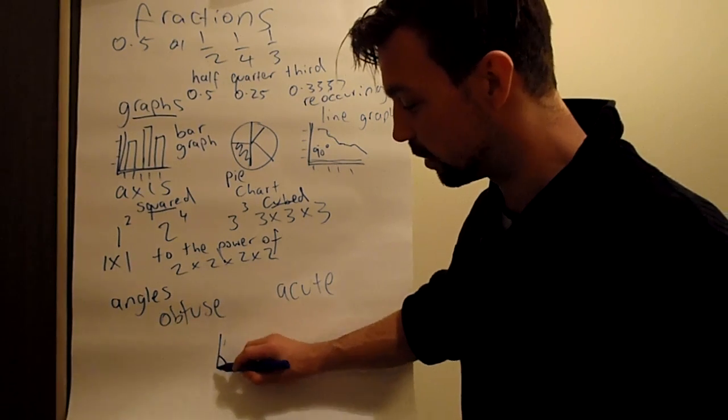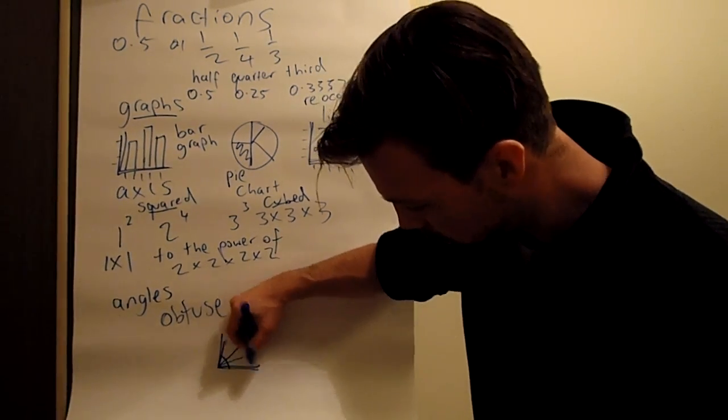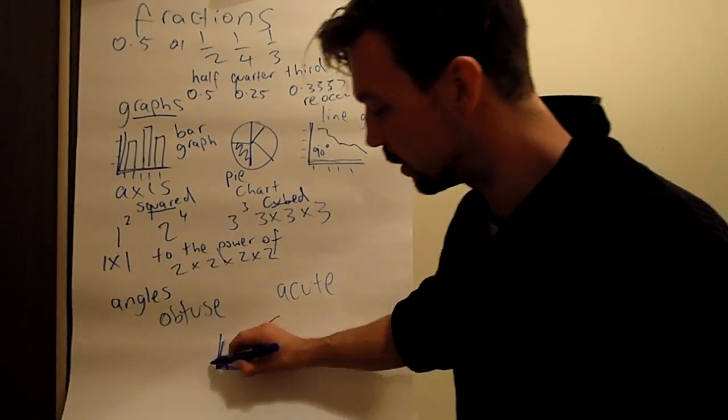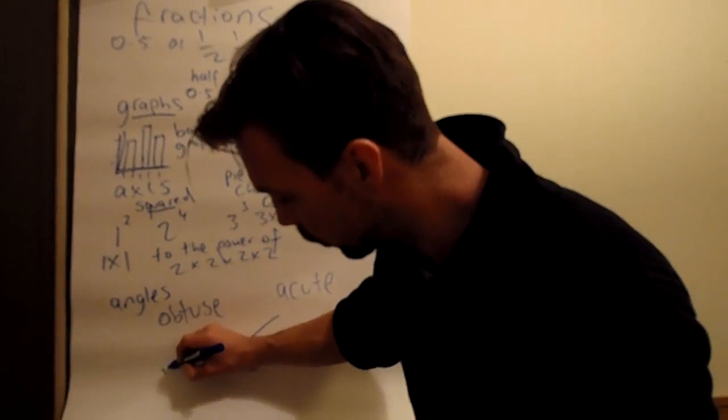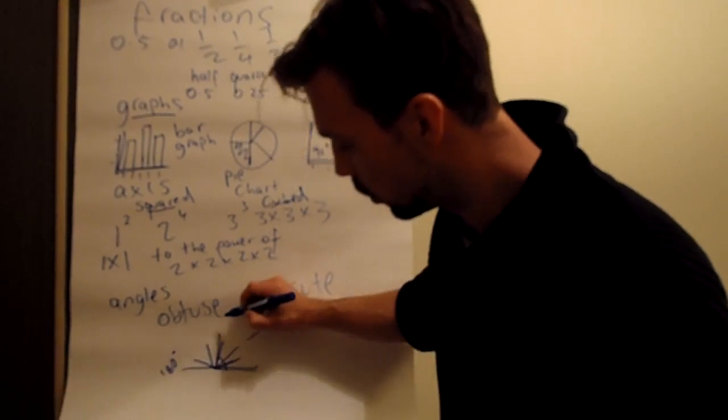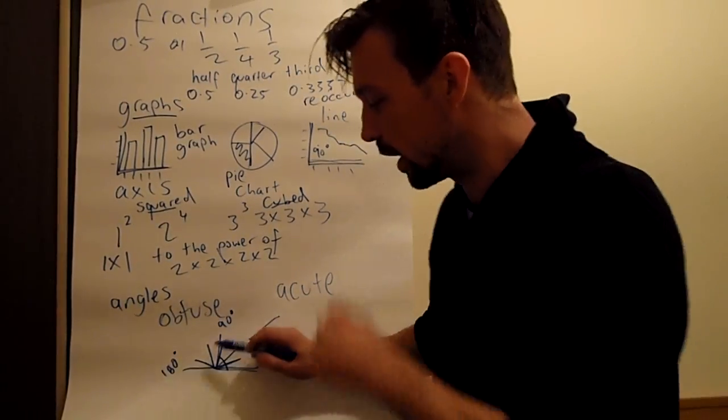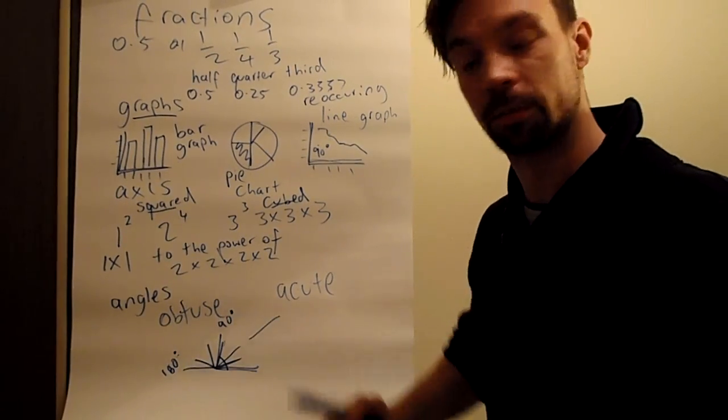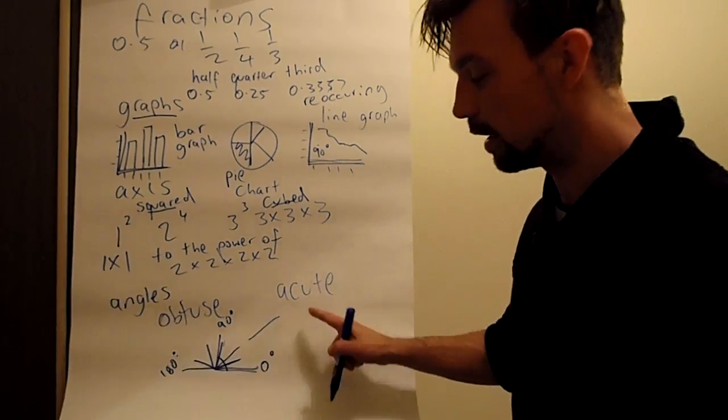So we have 90 degrees and you have the angle here. Anything that is less than 90 degrees, for example here, here, here, you have these two angles. This is acute. And anything that is more than 90 degrees, so for example you have 180 degrees here or you have 90 degrees here. So anything between 90 and 180 degrees is obtuse, and anything between 90 and 0 degrees is acute.